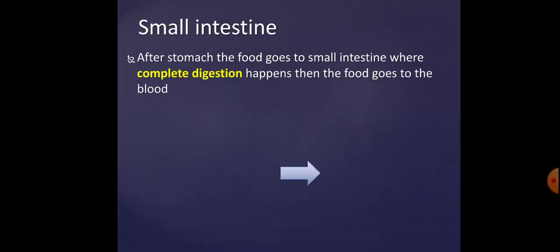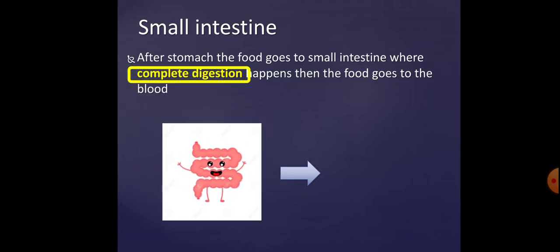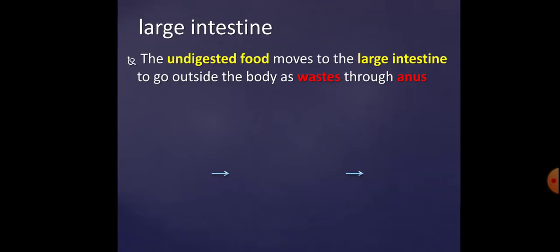Complete digestion happens in the small intestine. The small intestine completes the digestion of food and changes it into very simple substances, then passes them into the blood. The undigested food then goes to the large intestine.